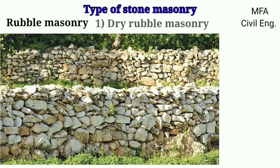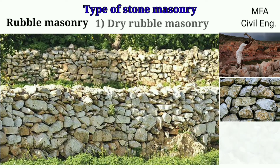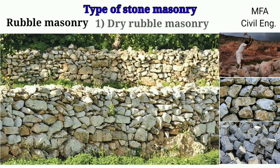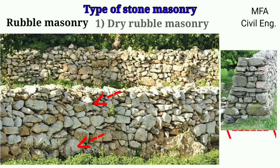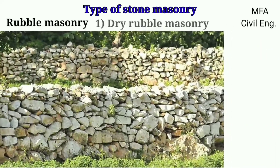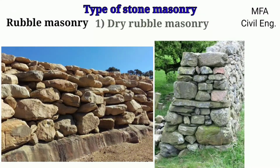Dry rubble masonry is the most inferior type of masonry in which either quarry, undressed, or dressed stones are used without the help of any mortar. Bigger pieces of stone are arranged at the bottom with minimum void and proper interlocking. Small pieces of stone are used at the top. These walls are generally broader at the bottom and thinner at the top. This type of masonry is used for the construction of retaining walls and boundary walls at the quarry site.